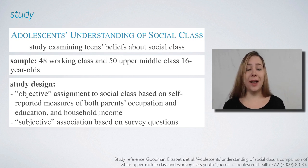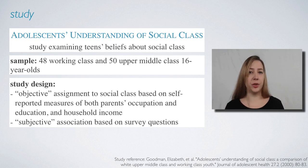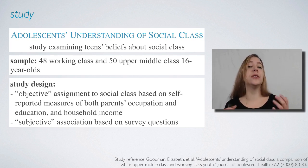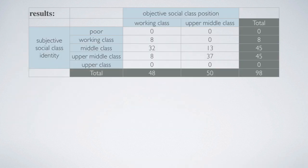Students were also asked a series of questions to determine their own subjective association to a social class — so this is the social class that students think they belong to. Given two categorical variables, objective and subjective social class, the study results can be summarized into a contingency table like this one.